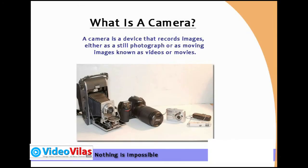First and foremost, what is a camera? A camera is a device that records images either as a still photograph or as moving images known as videos or movies.